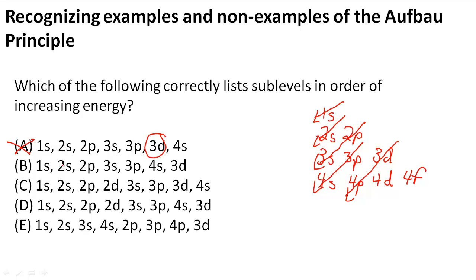B: 1s, then 2s, then 2p, then 3s, then 3p, then 4s, then 3d. This is definitely our answer.